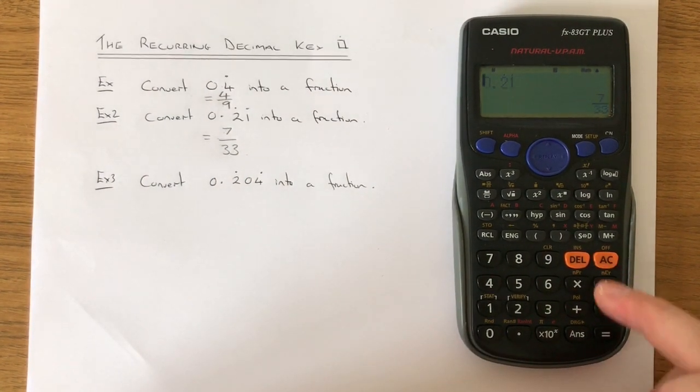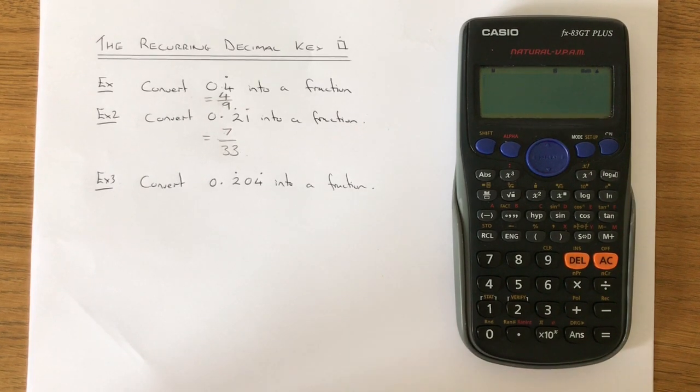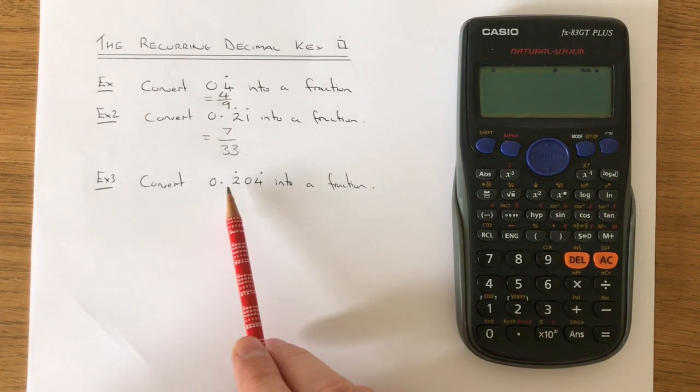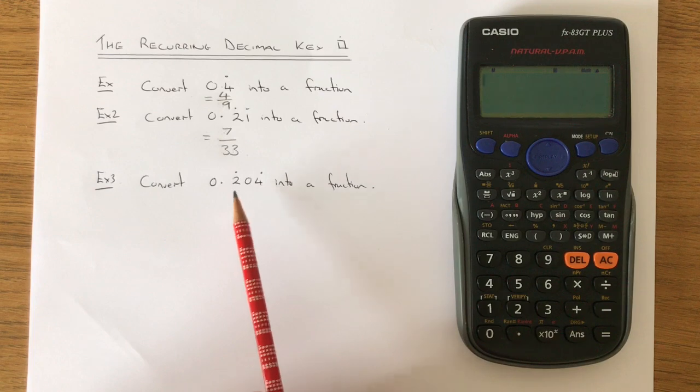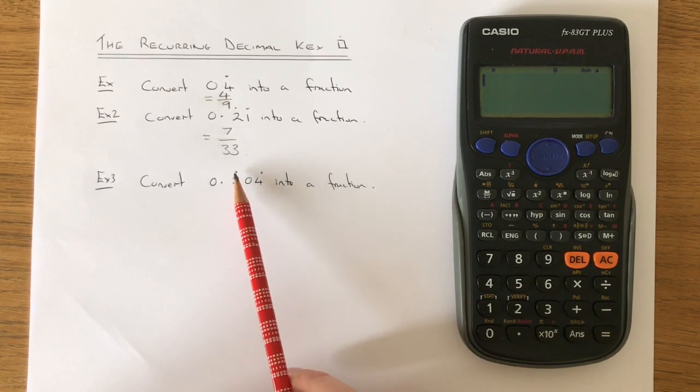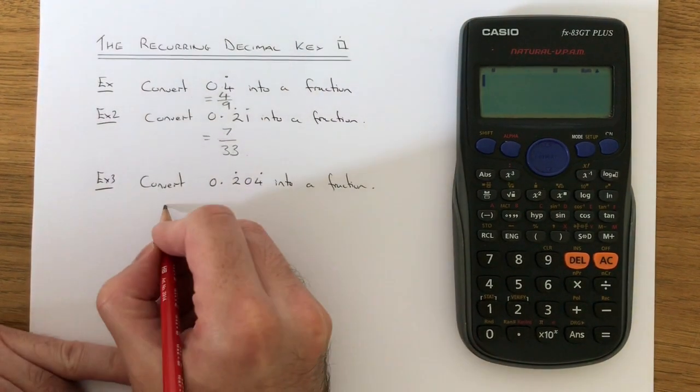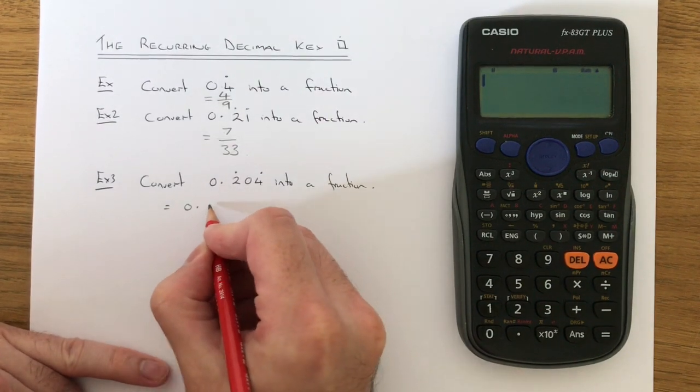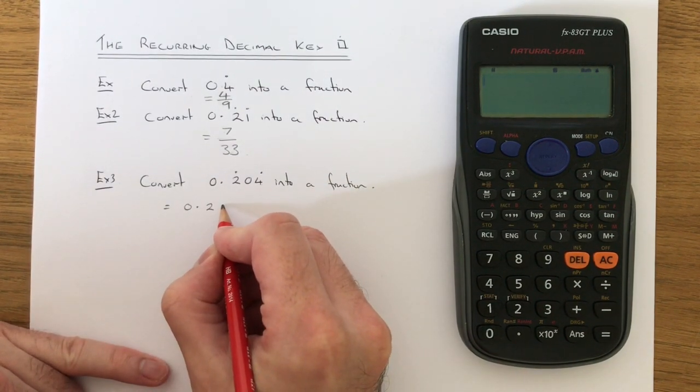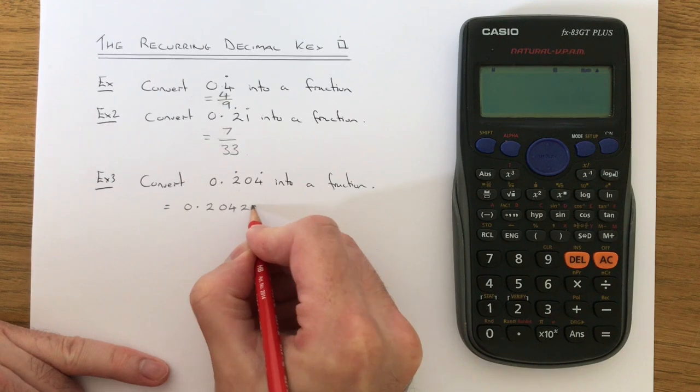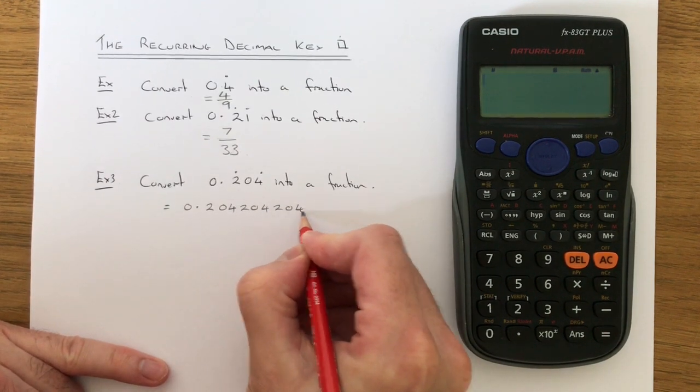Let's delete that one off. The final one is a little bit trickier to type in. This time we've got to convert 0.204 into a fraction. We've got a dot on the 2 and the dot on the 4. This means that the recurring decimal is 0.204, 204, 204, etc.